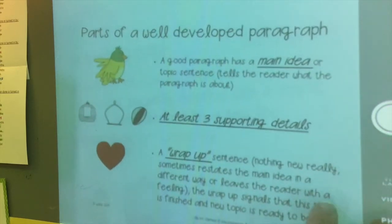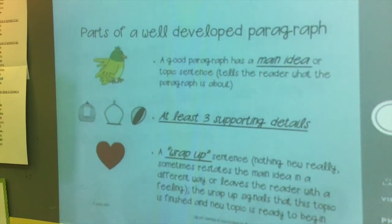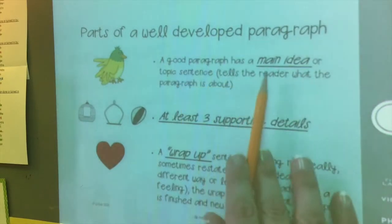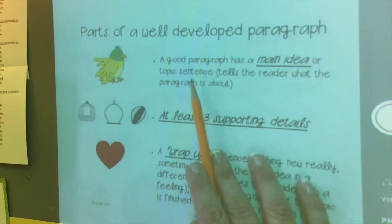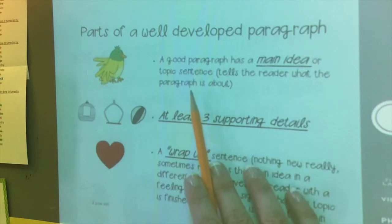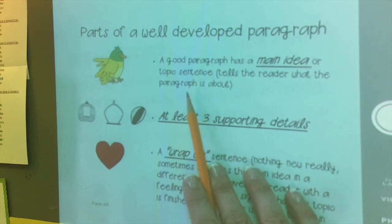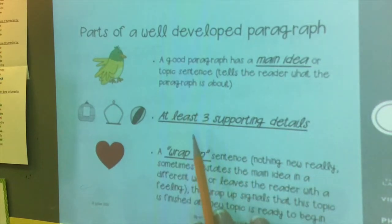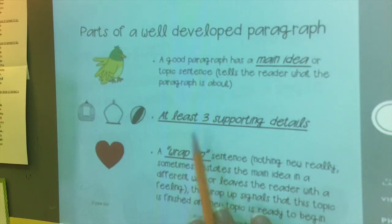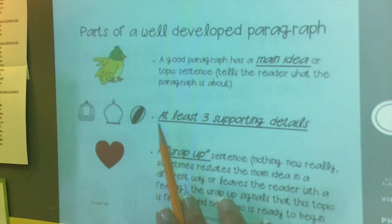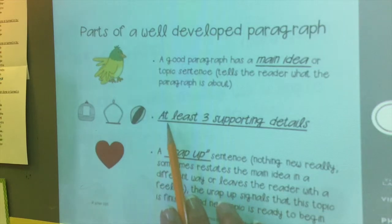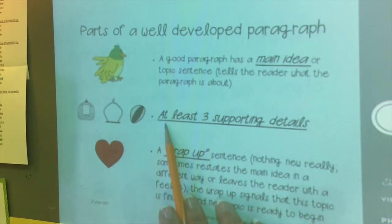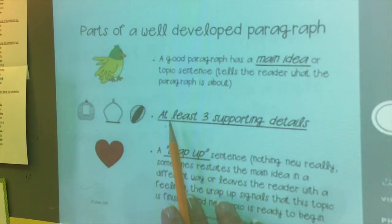Notice I said well-developed. A well-developed paragraph, or a good paragraph, has a main idea or a topic sentence — it tells the reader what our paragraph is going to be about. It also has at least three supporting details, which usually translates into three sentences. It can be more, and occasionally you may see a paragraph with fewer.